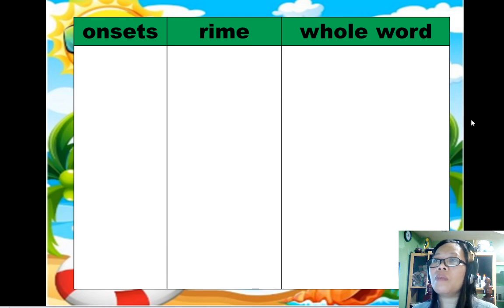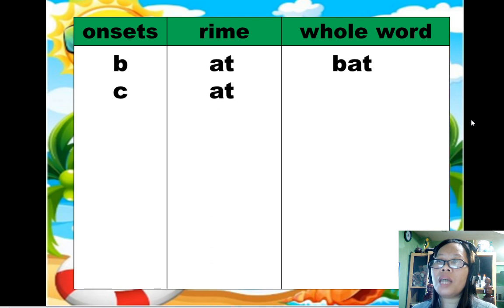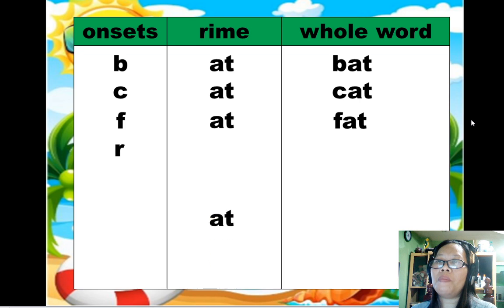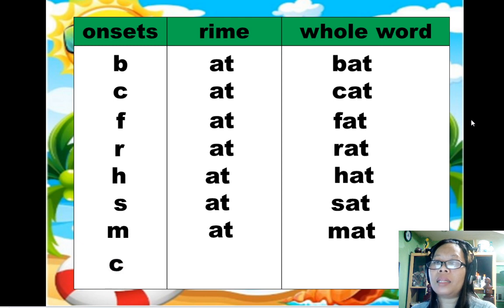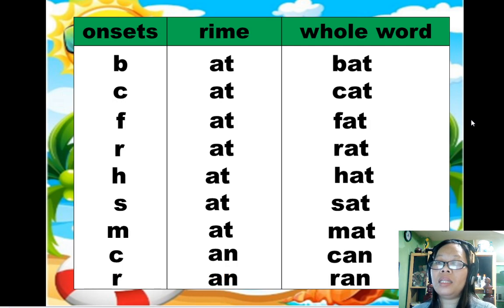Now let's form a word from the given onsets and rhyme. B plus -at: bat. C plus -at: cat. F plus -at: fat. R plus -at: rat. H plus -at: hat. S plus -at: sat. M plus -at: mat. C plus -an: can. R plus -an: ran.